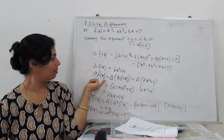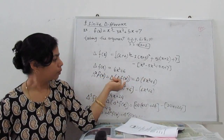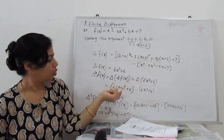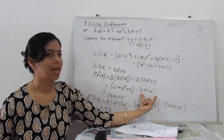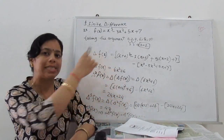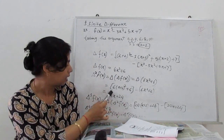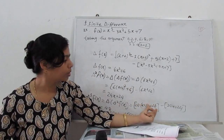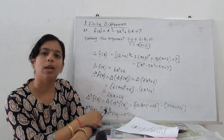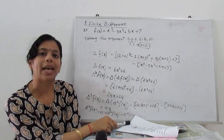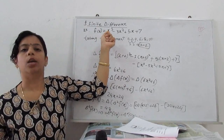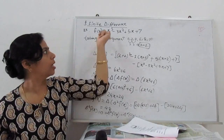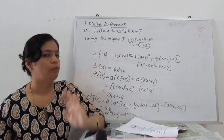For the second-order operator, delta squared f(x) = delta of delta f(x). Substituting delta f(x) = 6x² + 6, we compute 6(x+2)² + 6 minus 6x² - 6, which simplifies to 24x + 24. For the third-order: delta cubed f(x) = delta of (24x + 24). Substituting x+2: 24(x+2) + 24 minus (24x + 24) = 48, a constant. Above the third order, all operators give zero, confirming this is a degree-3 polynomial.